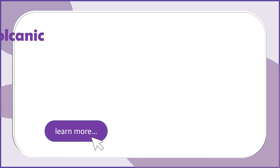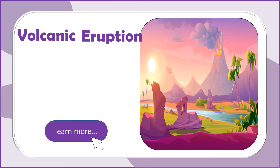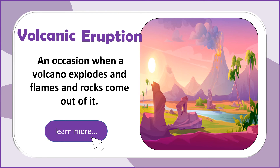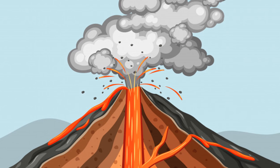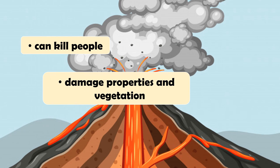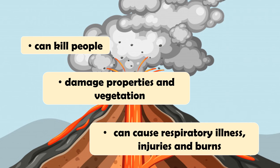Lastly is volcanic eruption. An occasion when a volcano explodes and flames and rocks come out of it. Volcanoes are dangerous. They can kill people and damage property and vegetation. It can also cause respiratory illness, injuries, and burns.